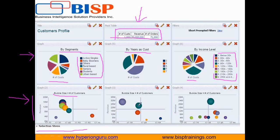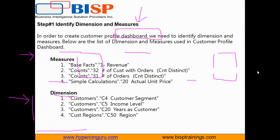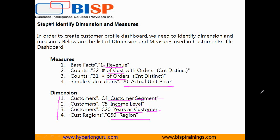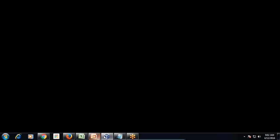I'll show you all of these step by step. I have three more bubble charts — we'll see each one in detail. To build this dashboard, the first step is to recognize how many measures or facts are needed and how many dimensions. Analyzing the requirement, I found we need four dimensions: customer segment, income level, year as customer, and region. And I need four measures: revenue, number of customers, number of orders, and actual unit price.